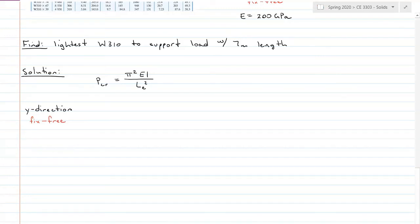My P critical is 1600 kilonewtons is equal to π² times E, 200 gigapascals, times I all over my effective length. So that's 2 times 7 meters squared. Now I've got kilonewtons, gigapascals, and meters.